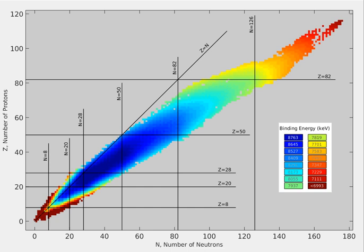In nuclear physics, the valley of stability, also called the nuclear valley or energy valley, is a characterization of the stability of nuclides to radioactivity based on their binding energy.